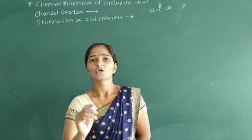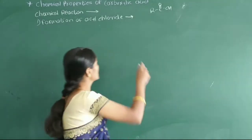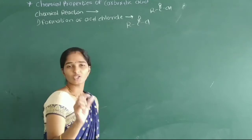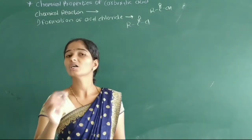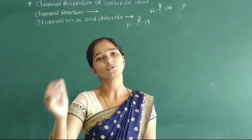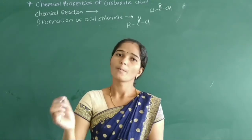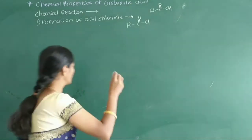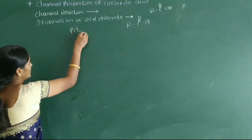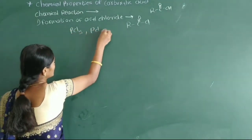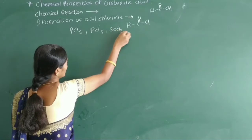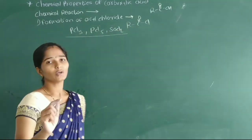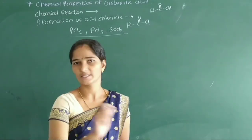The functional group of acyl chloride is RCOCl. Carboxylic acid is converted into RCOCl, that is acyl chloride, using three different reagents: PCl3, PCl5, and SOCl2. These three reagents are used for the preparation of acyl chloride from the corresponding carboxylic acid.